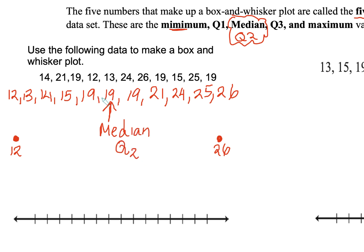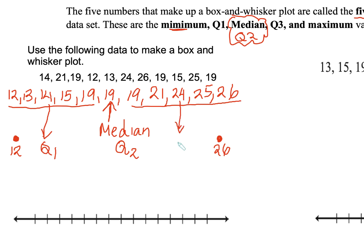Now we have to find the median for the lower half, and then we have to find the median for the upper half. The lower half has five data points, so the median would be the middle value, which would be 14. So 14 is our Q1. From 19 to 26, the median value would be 24, so that would be our Q3.